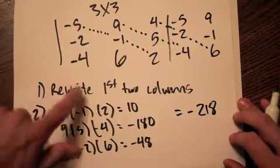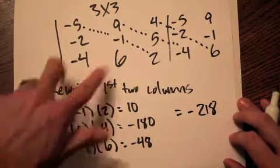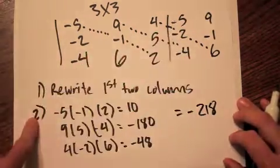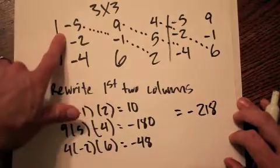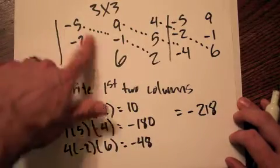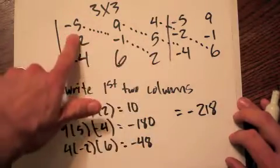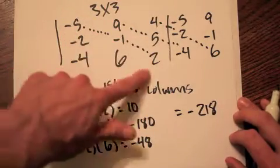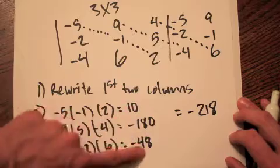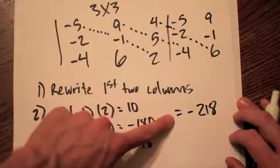Once we get these three numbers, we're going to add them together. So 10 plus negative 180 plus negative 48 is going to give us negative 218. So to recap: rewrite the first two columns, draw your diagonals starting with the upper left, take each diagonal's elements, multiply them, and then add those three numbers together.